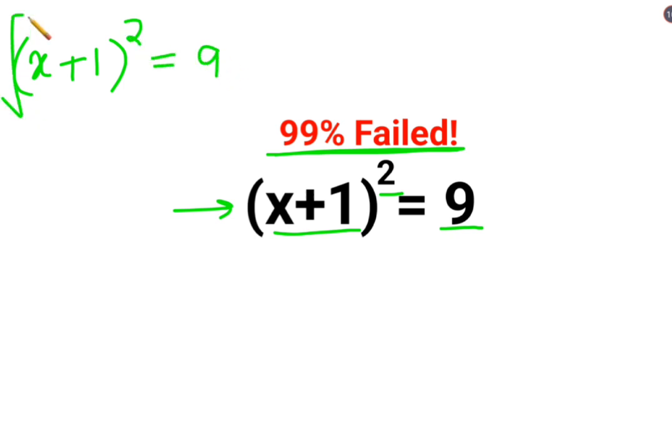So taking square roots on both sides, the square and the root get cancelled. So we are left with x+1 equals to √9, which can be written as plus or minus 3.